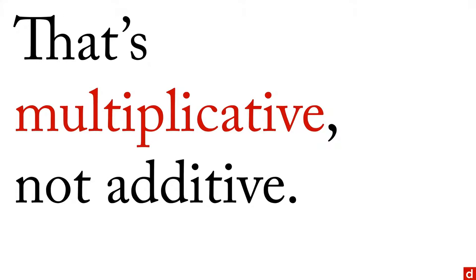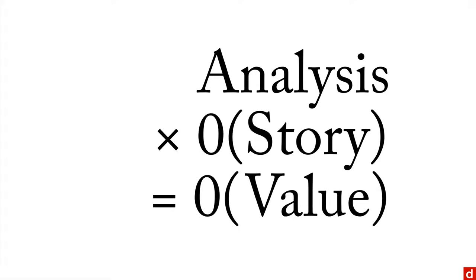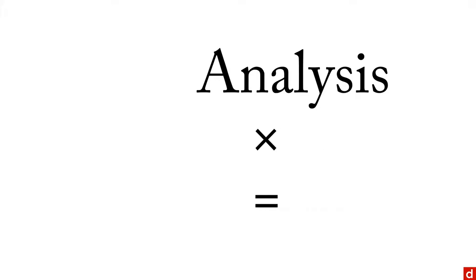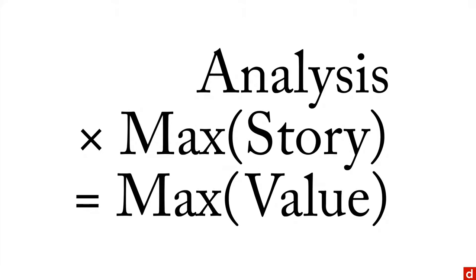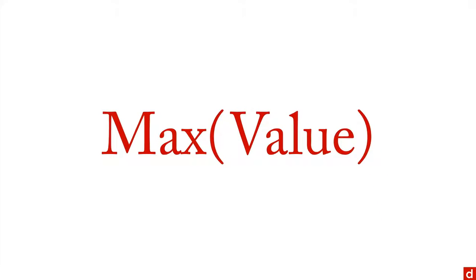One consequence of that is when you go back to analysis times story equals value — if you have zero story, you're going to have zero value, because anything times zero is zero. So what we really want to do is maximize the story so that we can maximize the value that results from our analysis. Maximum value is the overall goal here. The analysis, the tools, the tech are simply methods for getting to that goal.